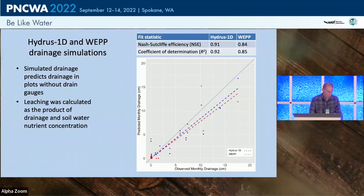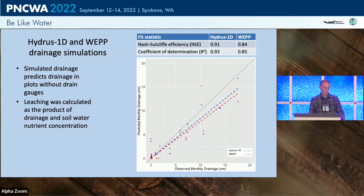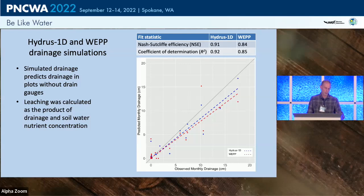We used drainage data and physical soil characteristics from each facility to parameterize the models, then simulate drainage from all sites. The observed versus predicted graph shows good fit — Nash-Sutcliffe and R-squared values approaching 1.0, especially for Hydrus — giving us good confidence in these models.